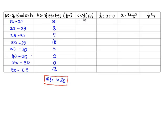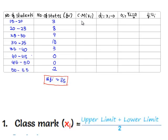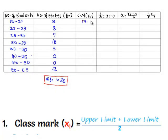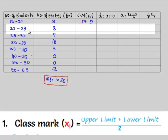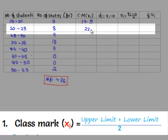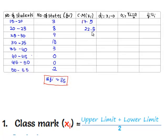Now we have to find CM, that is class marks xi. 15 plus 20 by 2 is 17.5, 20 plus 25 by 2 is 22.5, and similarly if we write we get.